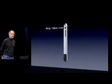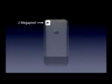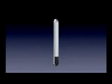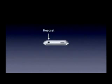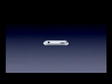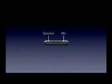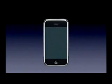We have a little switch for ring and silent, and a volume up/down control. On the back, the biggest thing of note is a two-megapixel camera built right in. On the top, there's a 3.5mm headset jack — all your iPod headphones fit right in — a tray for your SIM card, and a sleep/wake switch. On the bottom, we have a speaker, a microphone, and our 30-pin iPod connector.